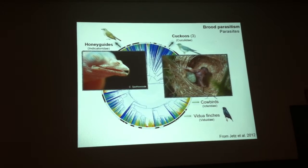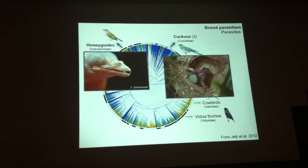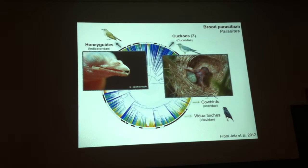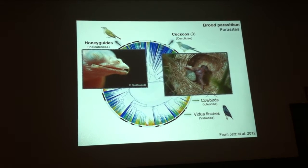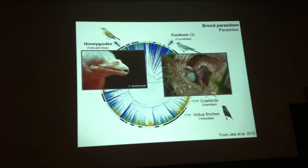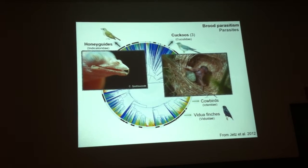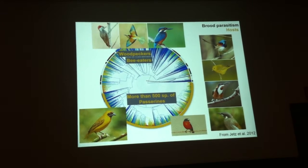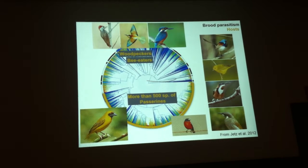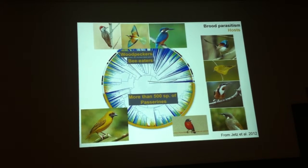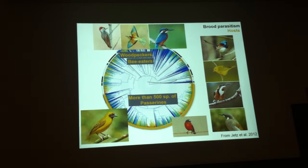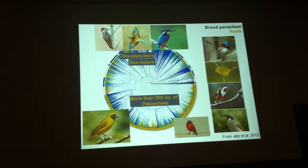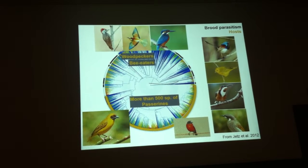Cowbirds in America and whydah finches in Africa are less virulent, and the chicks of these bird parasites can be raised side by side with the progeny of the host. Brood parasitism is a very widespread strategy because there are almost 100 species of bird parasites and more than 500 species of passerines that are hosts of bird parasites. There are also woodpeckers and bee-eaters that are main hosts of parasites in Africa.